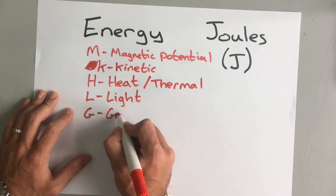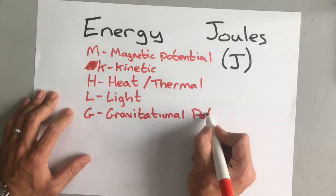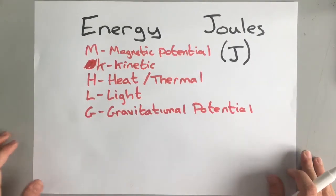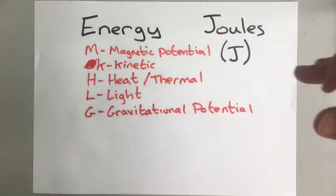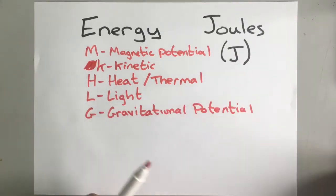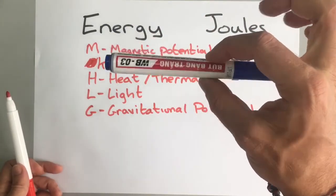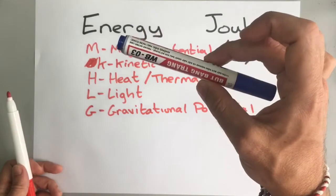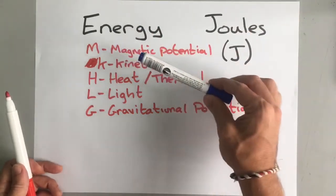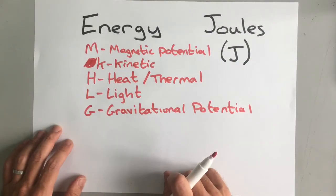Then we've got G for gravitational potential. Remember, potential means the possibility to convert that energy into something else like movement. And so gravitational potential energy is when you hold something high up. It has the possibility, the potential to convert that energy into movement, into kinetic energy when you drop it. So the higher something is, the more gravitational potential energy it has.